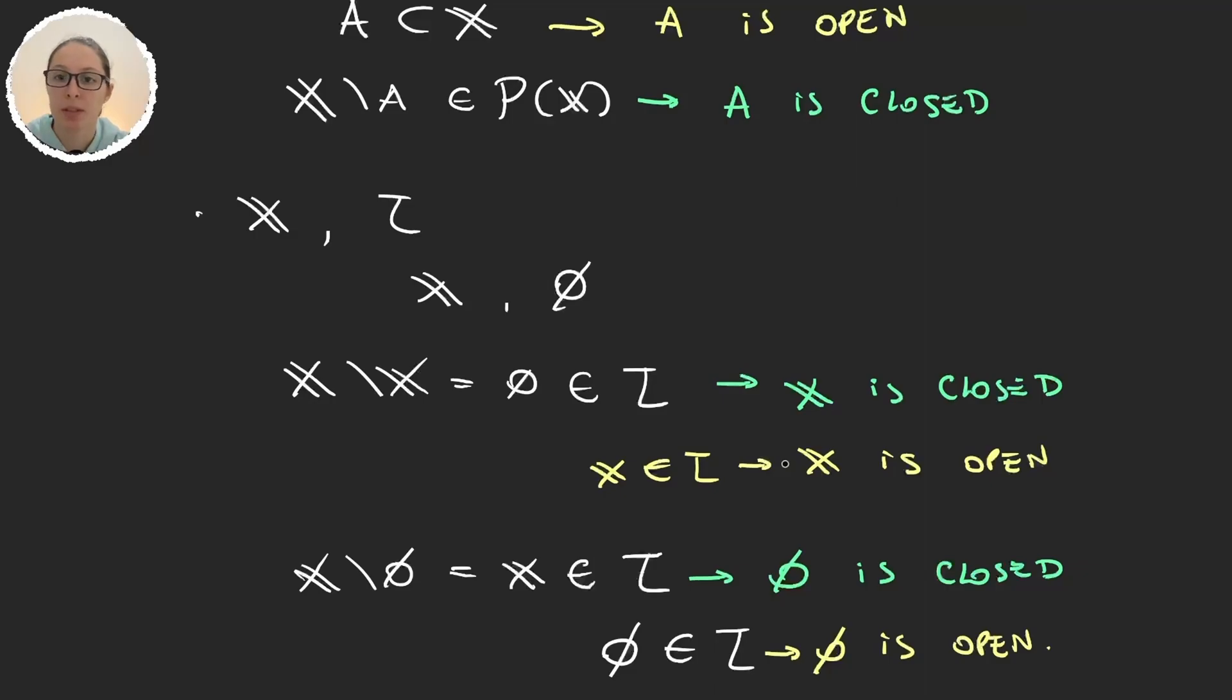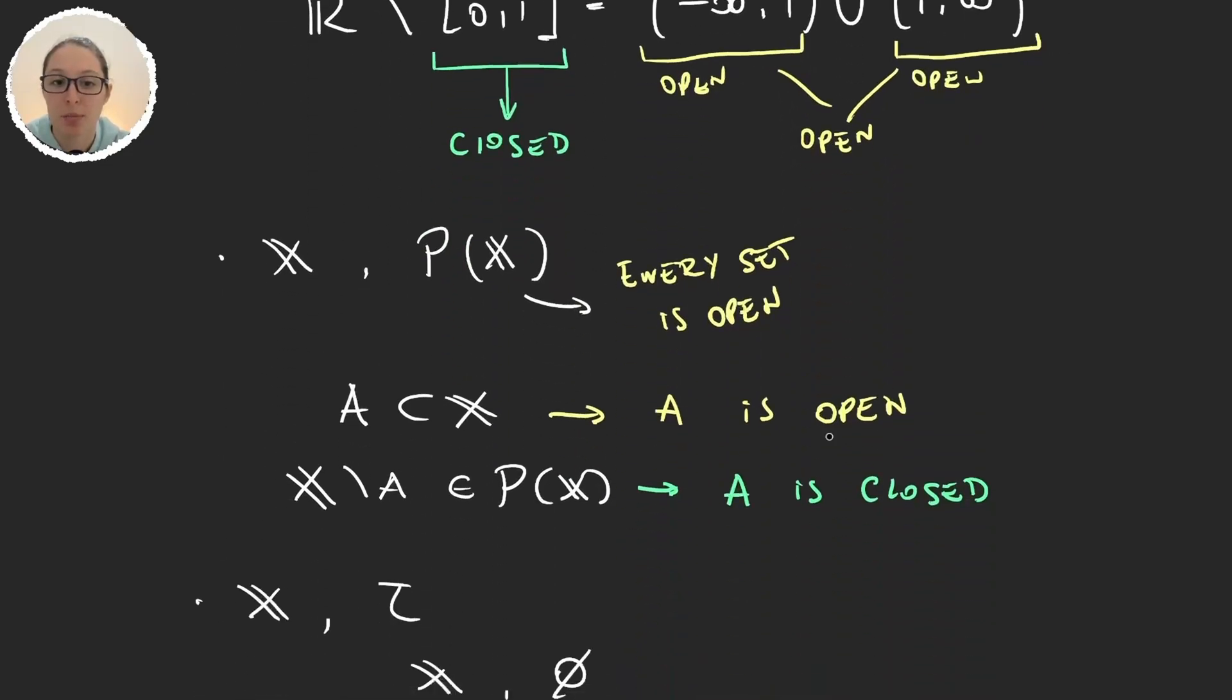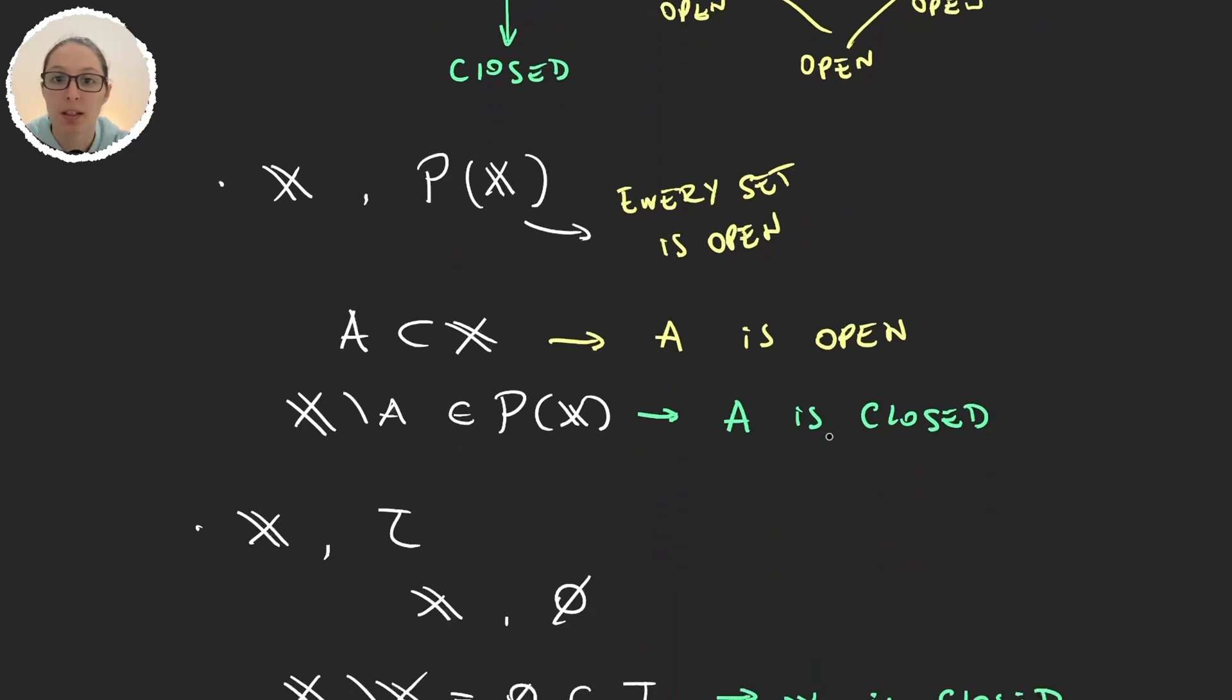So sets can be only closed, like here [0,1] is closed and it's not open. They can be just open like these intervals here. But if we change topologies we can have examples of sets that are both open and closed.